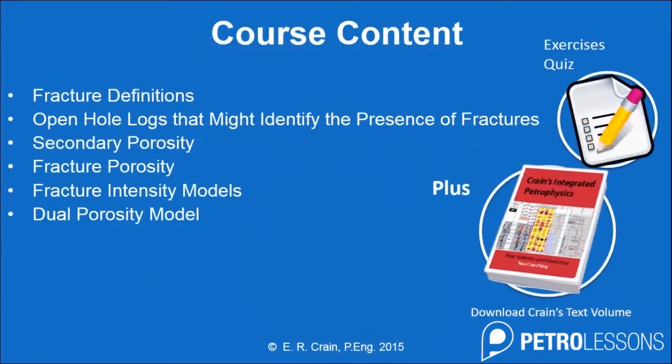In this lecture, we'll first of all define what a fracture is and what the different parts of a fracture represent — that is, the fracture itself, fracture-related porosity, and then the matrix porosity of the rock itself. We're going to look at what might happen to open hole logs in the face of a fracture. Most open hole logs will have some kind of artifact if there are lots of fractures, and since we run open hole logs in nearly every well, it's quite useful to go looking for the presence of fractures on your open hole logs.